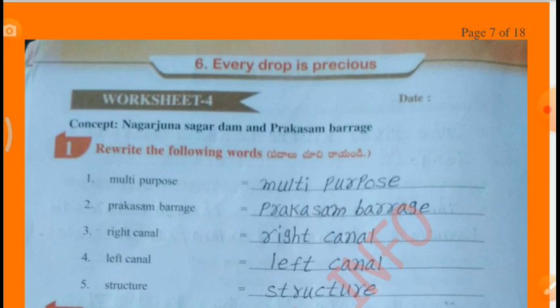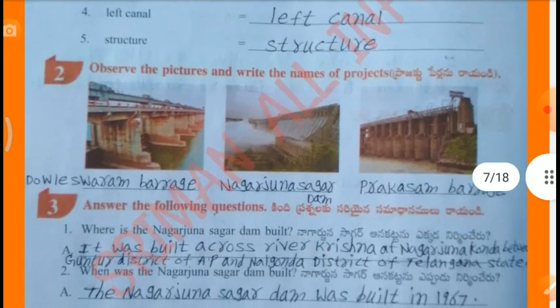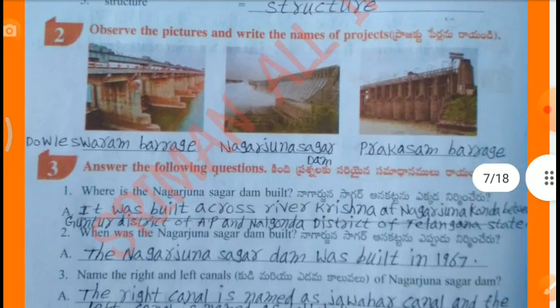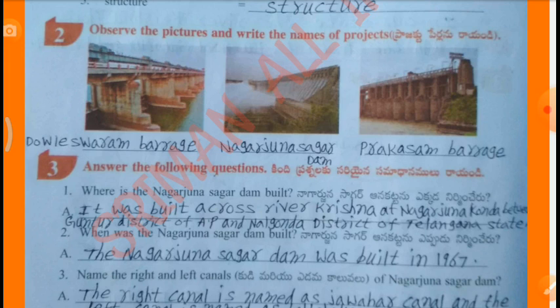Worksheet 4. Rewrite the following words: Multi-Purpose, Prakasham Barrage, Right Canal, Left Canal, Structure. Observe the pictures and write the names of projects: First one, Dowleswaram Barrage; Second one, Nagarjuna Sagar Dam; Third one, Prakasham Barrage.